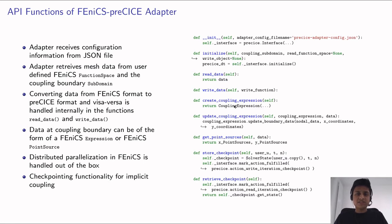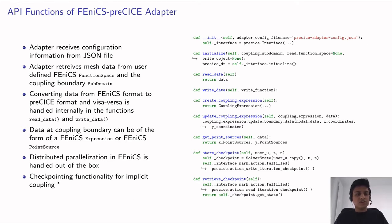Once the expression is defined, it is modified again and again with the updated data received from preCICE. An important feature of the adapter is that distributed parallelization in FEniCS done with MPI is completely handled out of the box while data mapping and interpolation is performed. Checkpointing functionality is also available in the adapter in the form of two functions — store checkpoint and retrieve checkpoint — for implicit coupling.